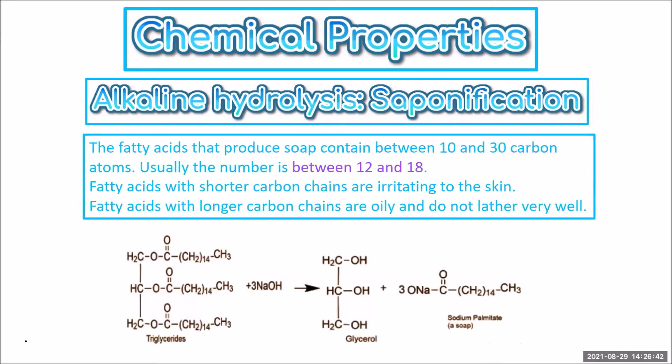Generally, the fatty acids that produce soap contain between 10 and 30 carbon atoms, but normally that number is kept between 12 and 18. If you have fatty acids with shorter carbon chains than 12, they end up being quite irritating to the skin. But if you have fatty acids with longer carbon chains than 18, they tend to be quite oily, so they don't actually lather up very well.